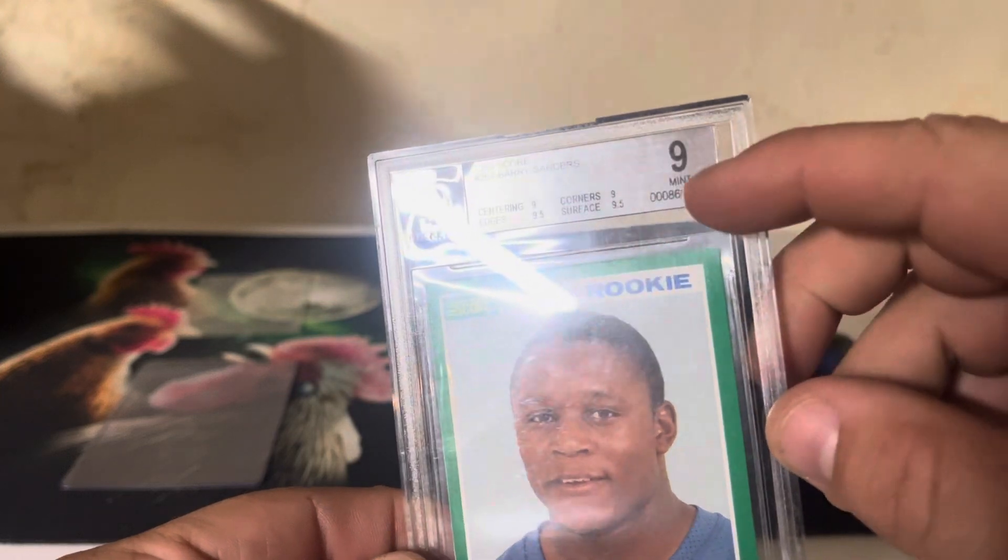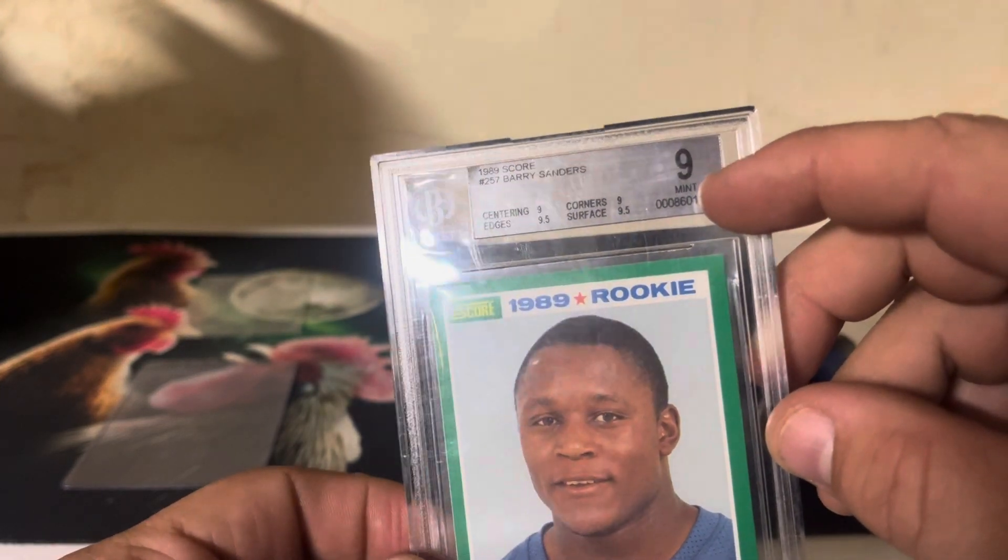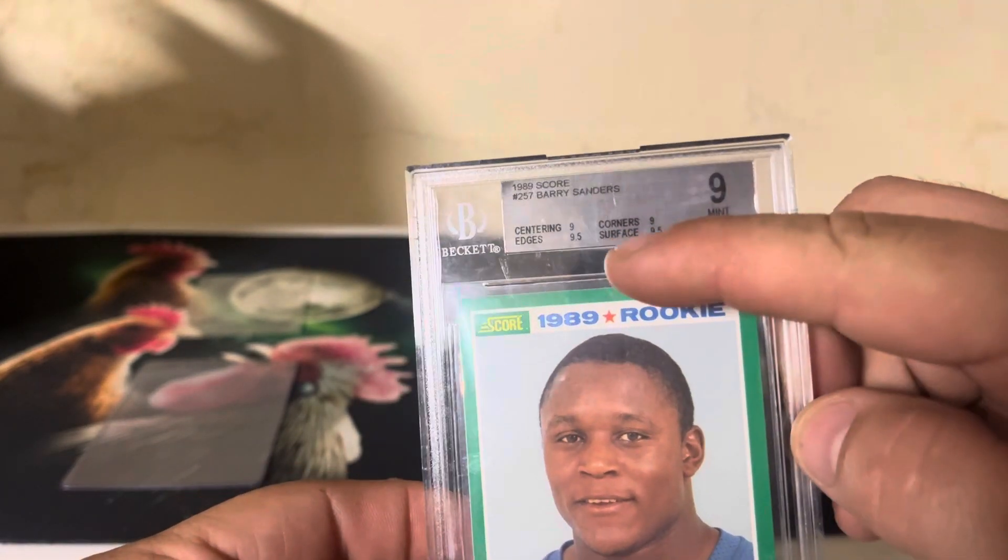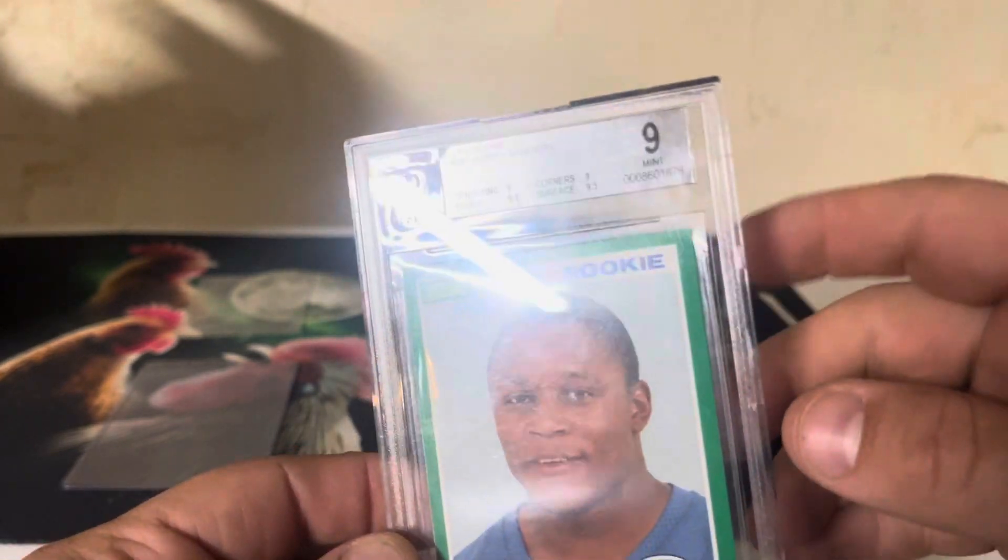So you take a look here. We've got a 9 in BGS. We've got 9 centering, 9.5 edges, 9 corners, 9.5 surface.